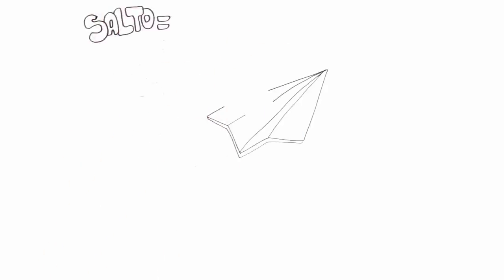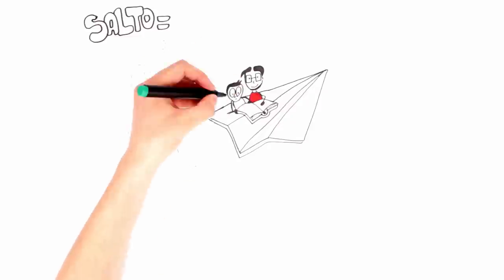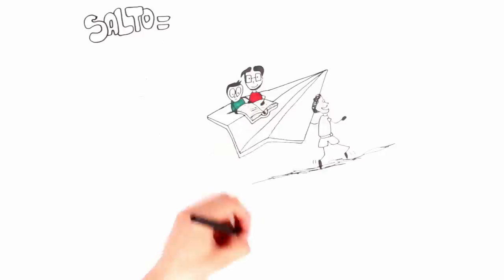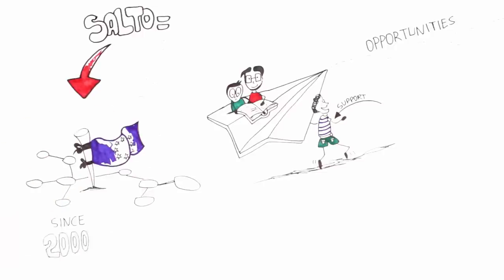SALTO Youth stands for Support, Advanced Learning and Training Opportunities within the Erasmus Plus Youth in Action programme. A network of eight SALTO Youth resource centres created by the European Commission has been contributing to the implementation of the European programmes for youth since 2000.